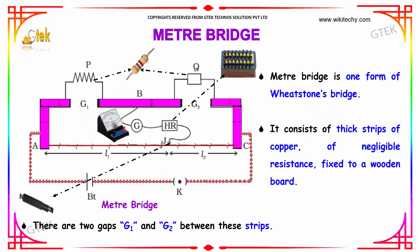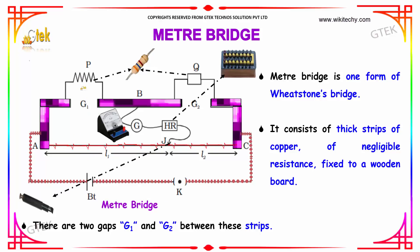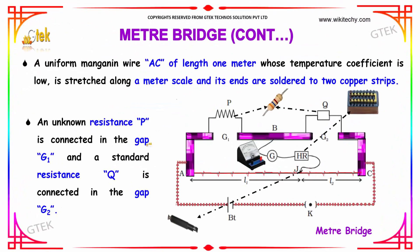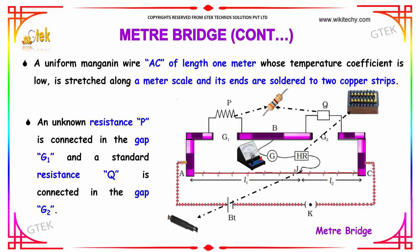The meter bridge is one form of the Wheatstone bridge. It consists of thick strips of copper of negligible resistance connected together. There are two gaps, G1 and G2, between the strips. A uniform manganin wire AC of length 1 meter, whose temperature coefficient is low, is stretched along a meter scale and its ends are soldered to two copper strips.